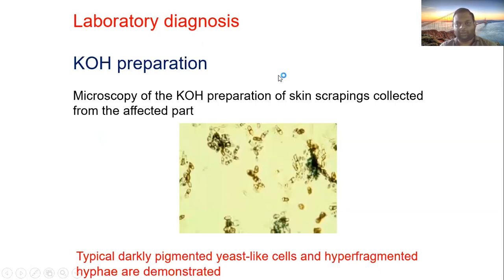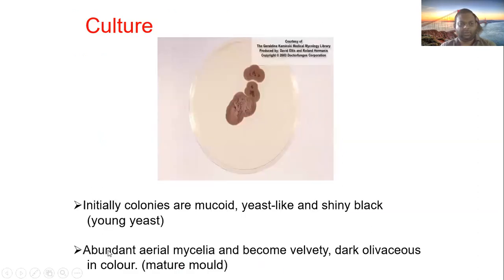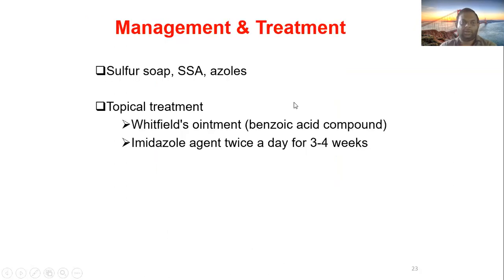For laboratory diagnosis, skin scraping is done and a KOH preparation is examined under the microscope. Typical dark-pigmented yeast-like cells and hyphal fragments are demonstrated. In culture, initial colonies are mucoid, yeast-like, and shiny black. With time, abundant aerial mycelium develops, becoming velvety and dark olive in color. For management, sulfur-containing preparations and selenium sulfide can be used, and azole agents are also possible topically.